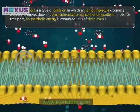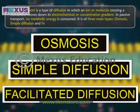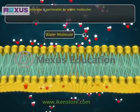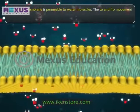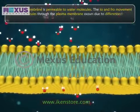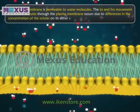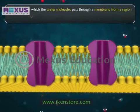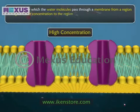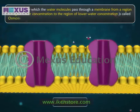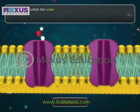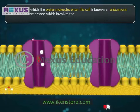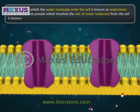Passive transport is of three main types: osmosis, simple diffusion, and facilitated diffusion. The plasma membrane is permeable to water molecules. The to-and-fro movement of water molecules through the plasma membrane occurs due to differences in the concentration of solutes on either side. The process by which water molecules pass through a membrane from a region of higher water concentration to lower water concentration is called osmosis. The process in which water molecules enter the cell is known as endosmosis, while the reverse process involving the exit of water molecules from the cell is known as exosmosis.